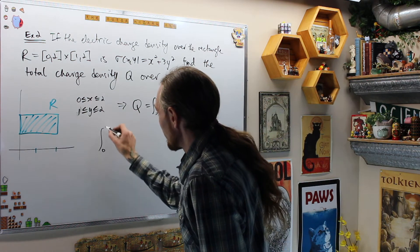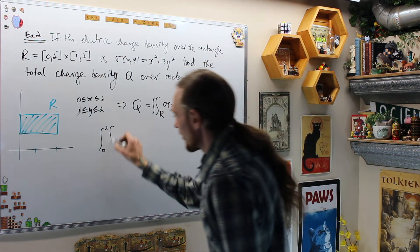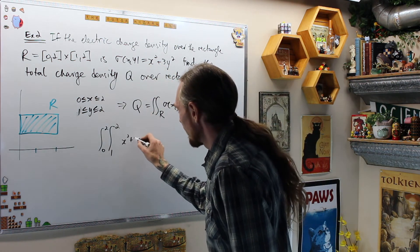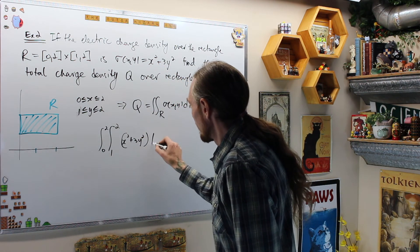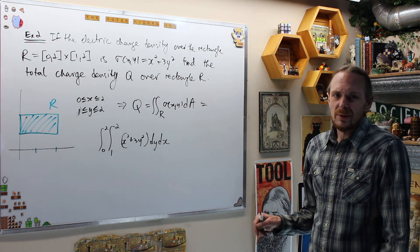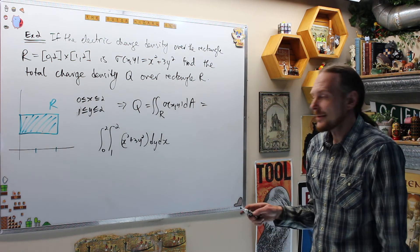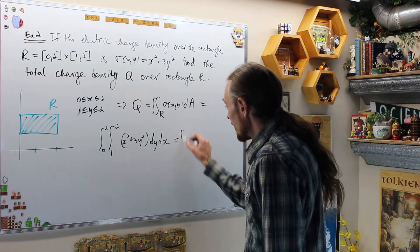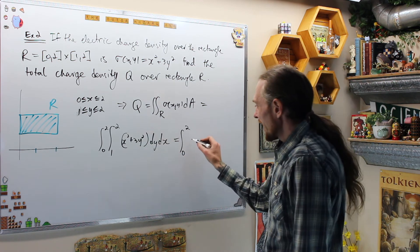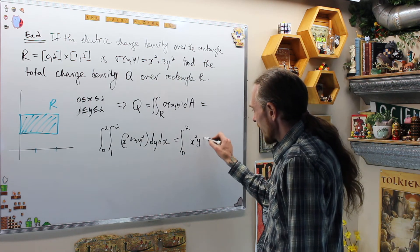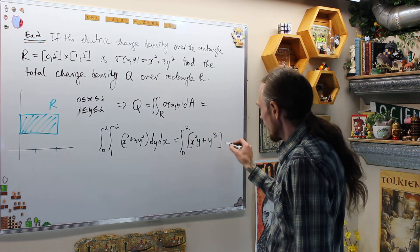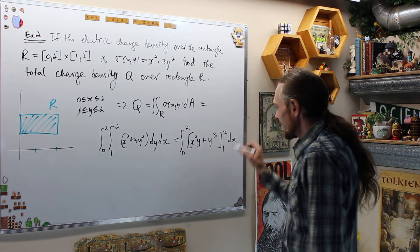This is equal to the integral from 0 to 2, the integral from 1 to 2, of x² + 3y², dy dx. By Fubini you could switch the order, but let's keep it as is. Fixing x and integrating in y gives [x²y + y³] evaluated from 1 to 2, dx.